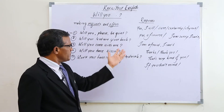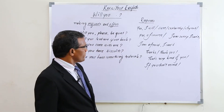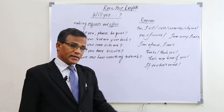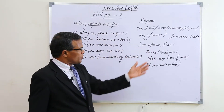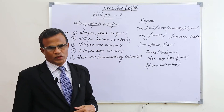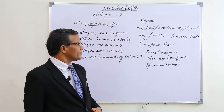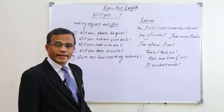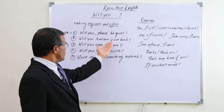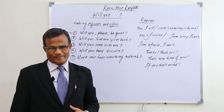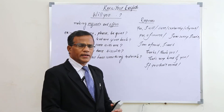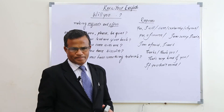For 'will you lend me your book?' the response may be 'I'm sorry, I can't' if he is not able to give it. In a polite way he can even say 'I'm afraid I can't.' If he is ready to lend his book, he can say 'Why not? Here it is' or 'Here you are' or 'There you are,' and hand it over.